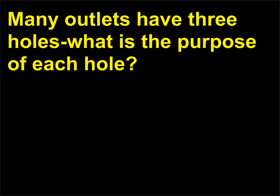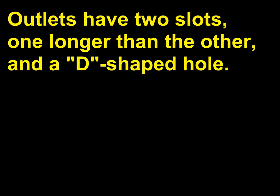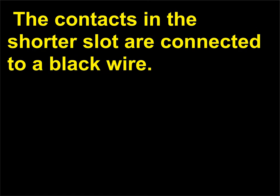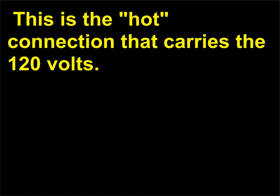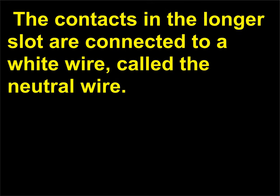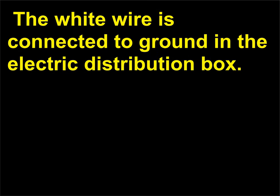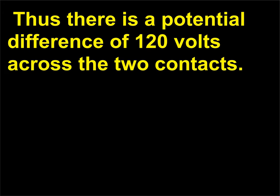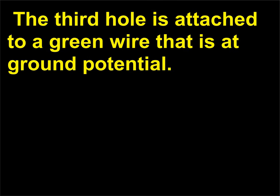Many outlets have three holes — what is the purpose of each hole? Outlets have two slots, one longer than the other, and a D-shaped hole. The contacts in the shorter slot are connected to a black wire — this is the hot connection that carries the 120 volts. The contacts in the longer slot are connected to a white wire, called the neutral wire. The white wire is connected to ground in the electric distribution box, so there is a potential difference of 120 volts across the two contacts. The third hole is attached to a green wire that is at ground potential.